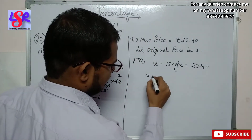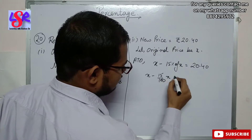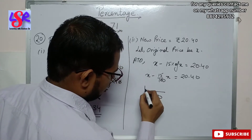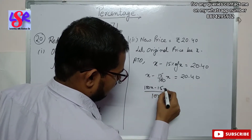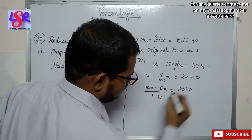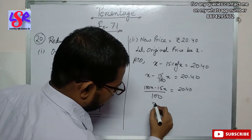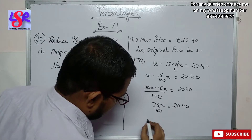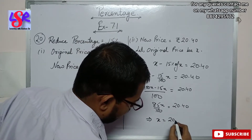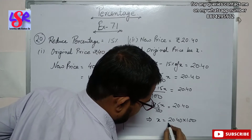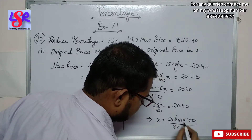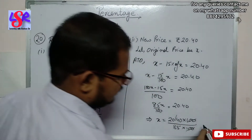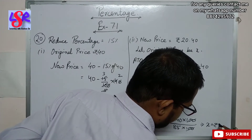Now we are going to solve it. This will be x minus 15 upon 100 x equals to 20.40. Now we take LCM and get 100, so 100x minus 15x equals to 20.40. Now 100 minus 15 x upon 100 equals to 20.40, and that implies x equals to 20.40 into 100 upon 85. Removing the decimal gives 100, which cancels, and on solving we get x equals to rupees 24.